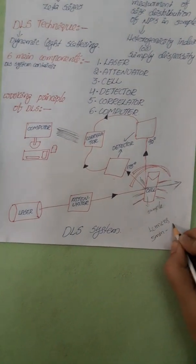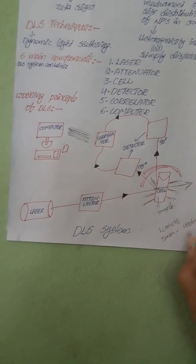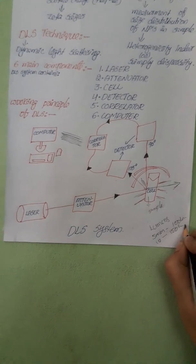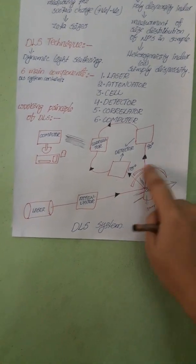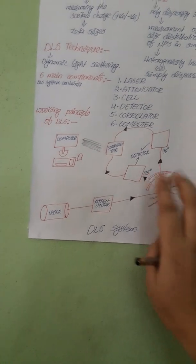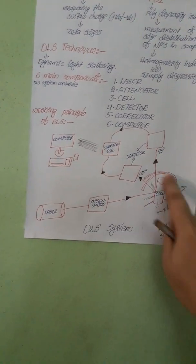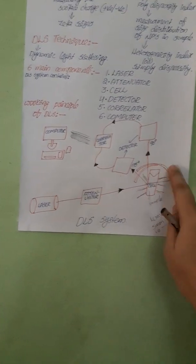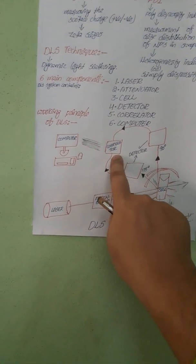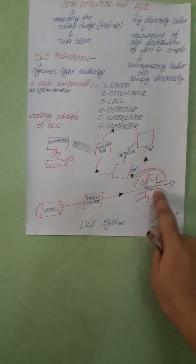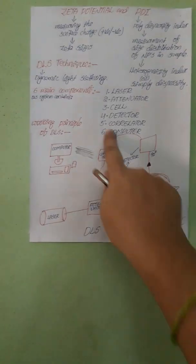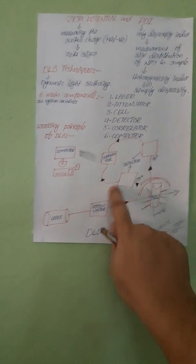For example, for five minutes some hundred lumens of light is scattered, and for ten minutes 150 lumens of light is scattered. That is how the correlator detects and compares how much light is scattering based on time intervals.